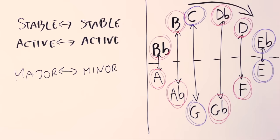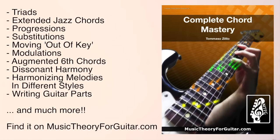If you are a guitar player, you can learn advanced harmony straight on your fretboard with my course, Complete Chord Mastery, where we cover everything from triads, extended jazz chords, progressions, substitutions, moving out of key, modulation, augmented sixth chords, dissonant harmony, harmonizing melodies in different styles, and especially how to translate all that into actual guitar parts that you can play live or in studio. You can find the link to Complete Chord Mastery in the description. You can take the Complete Chord Mastery course whether you are an absolute beginner or you are already advanced, and this because we are studying together, starting from the basics, but we do those basics in a different, more coherent way than what you normally see. So even an advanced player will learn a lot of new things by seeing harmony this way.